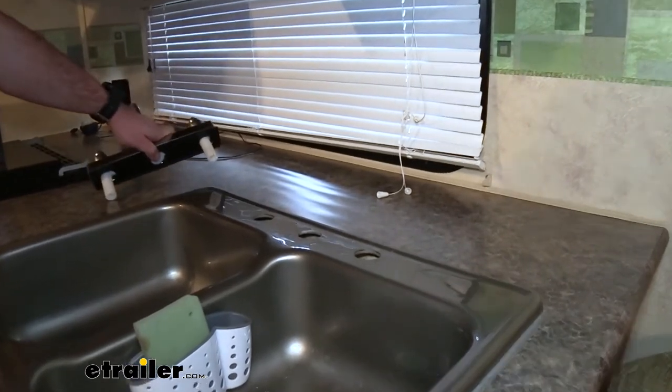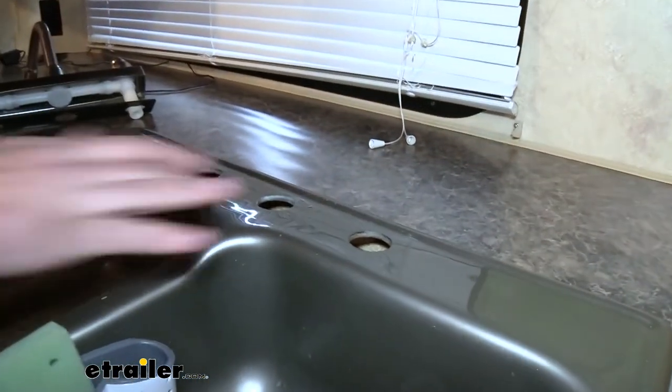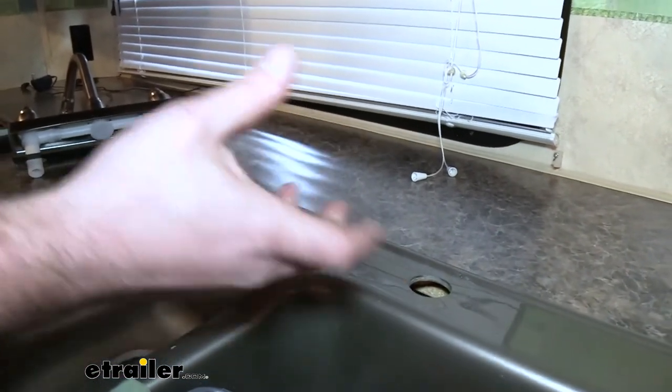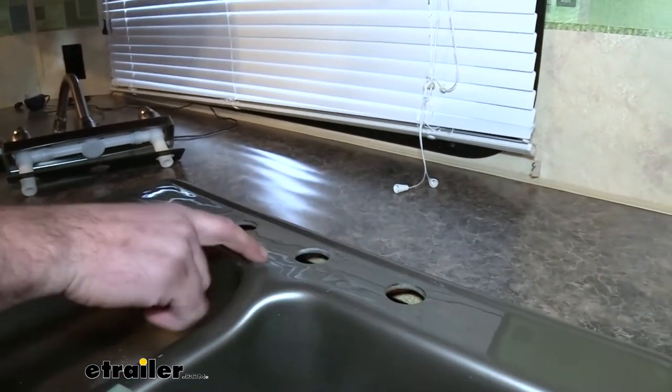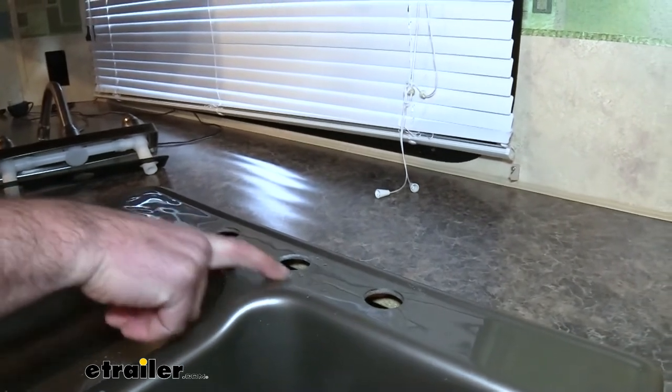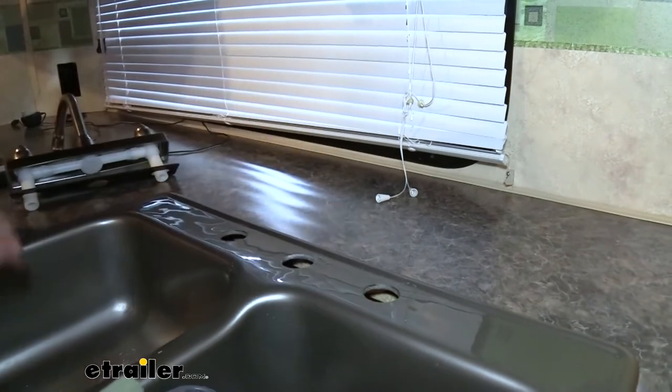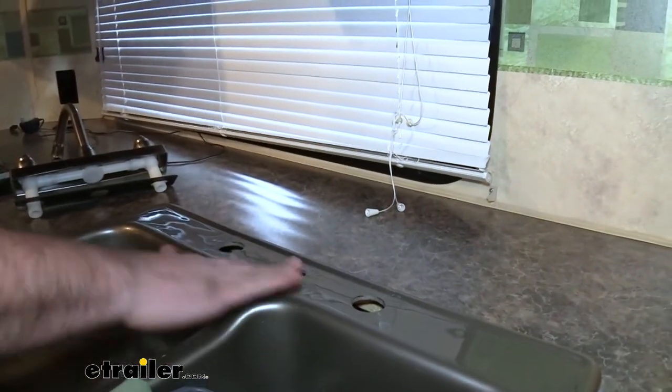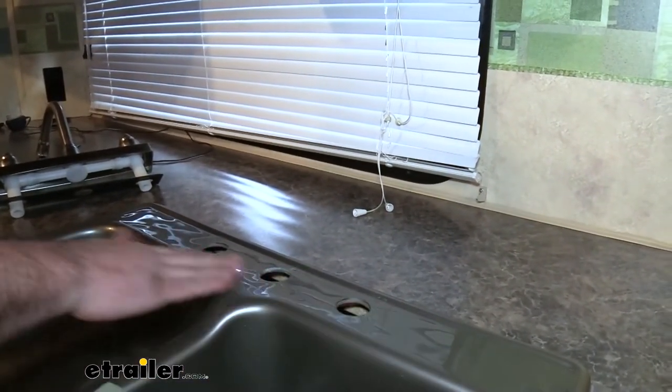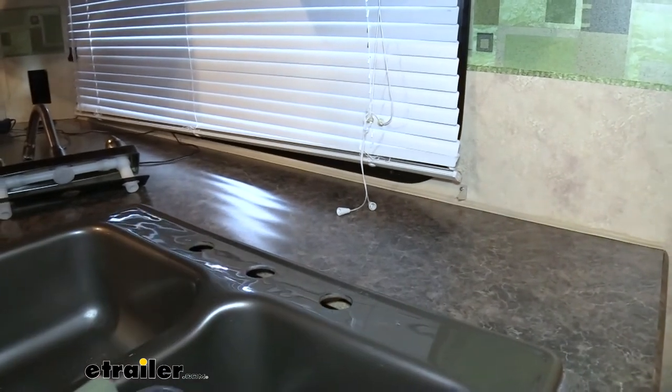While you have your old faucet off it's a good time to clean some of the buildup that might have over time left marks. That's going to be better when you put your new one on so there's not going to be any marks that might stick out past the fascia or the plate of the sink itself. Using soap and a rag or maybe some alcohol, it's a good time to do it now.